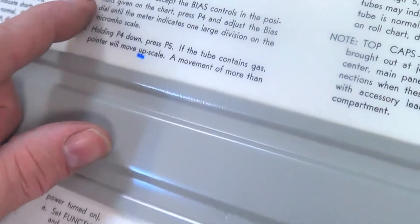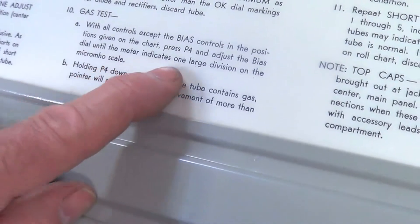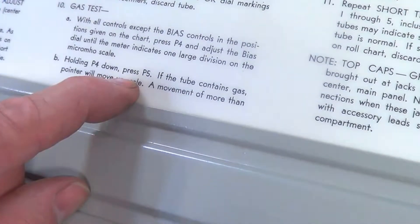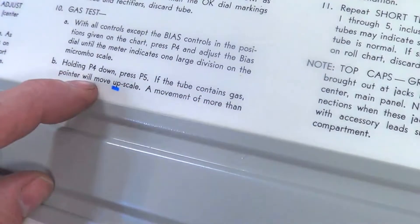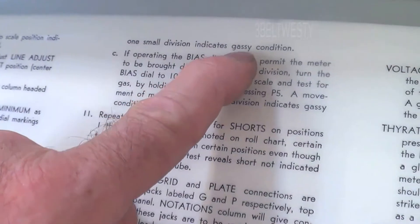Over here the gas test. All controls except bias control position. Press P4 just bias. One large division. While holding P4 down press P5. Tube contains gas will move up scale. Movement of more than one small division indicates a gassy condition.